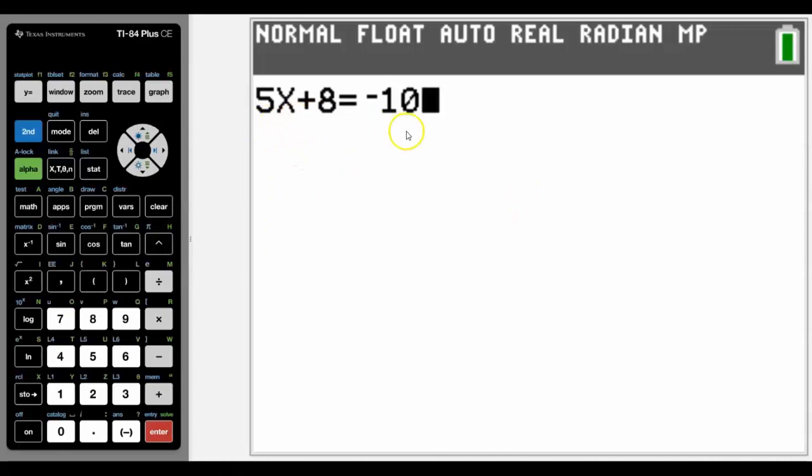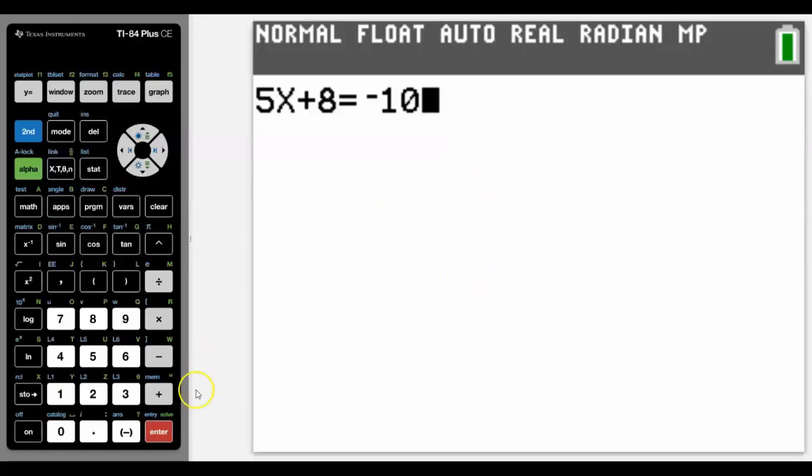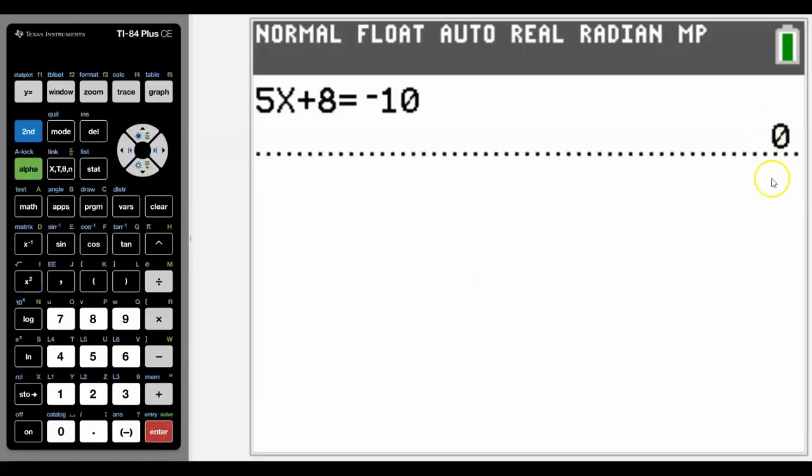If we are trying to solve this equation on the TI-84 Plus CE, we wouldn't actually get an answer, and the reason for that is it doesn't have CAS capability—that's Computer Algebraic Systems. In fact, if I press enter on here it gives us an answer of zero. Maybe something you didn't think it would get, but in this case it actually means not true.